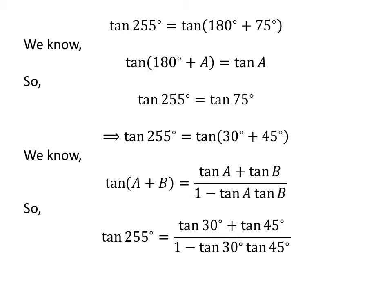Applying the above identity gives us: tangent of 255 degrees is equal to tangent of 30 degrees plus tangent of 45 degrees, upon 1 minus tangent of 30 degrees times tangent of 45 degrees.